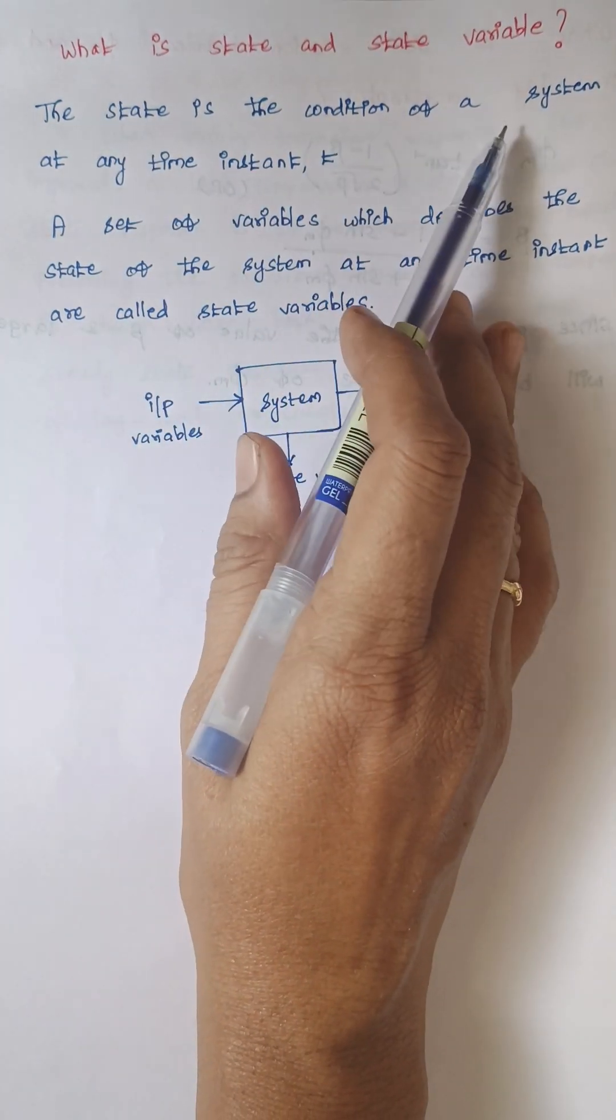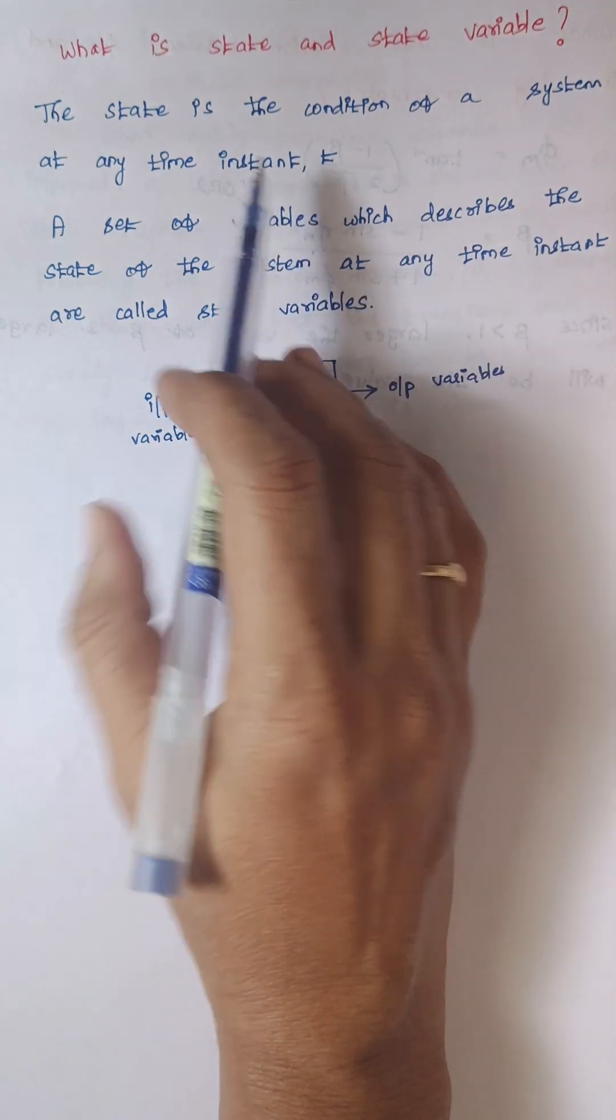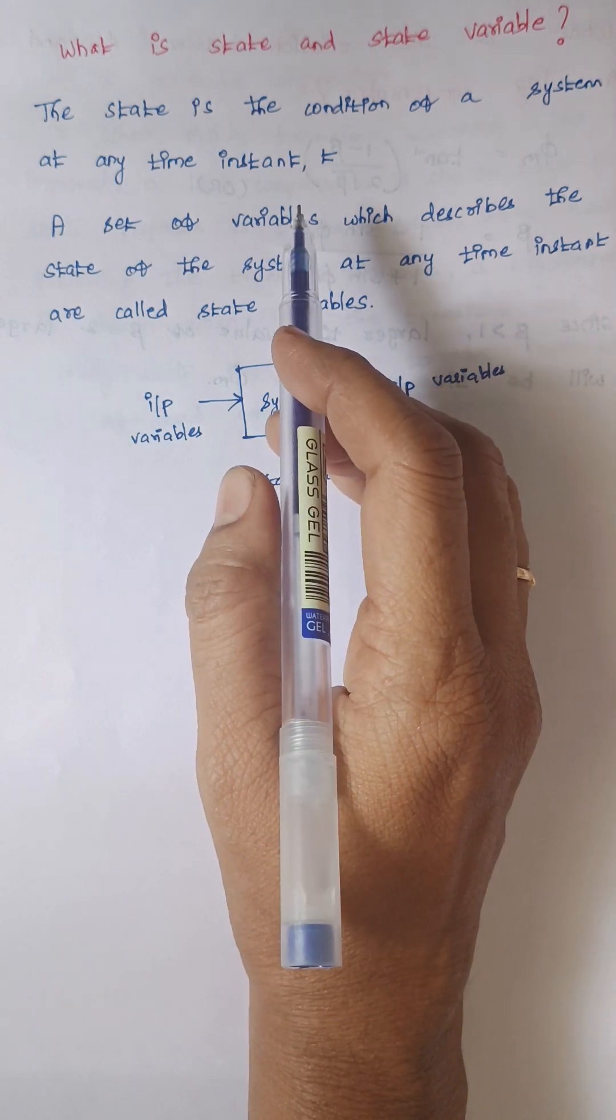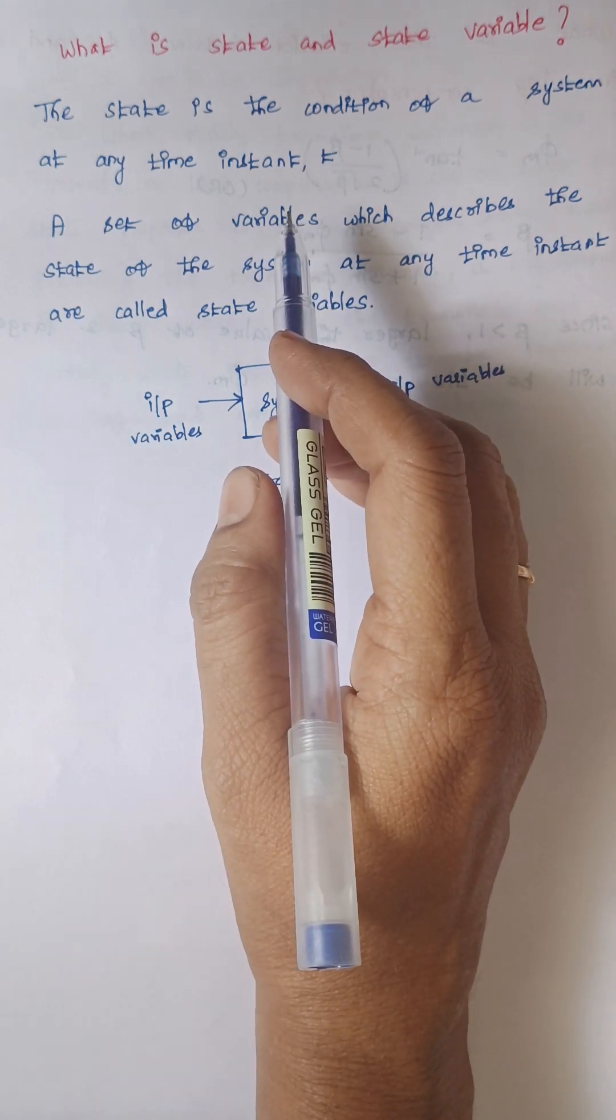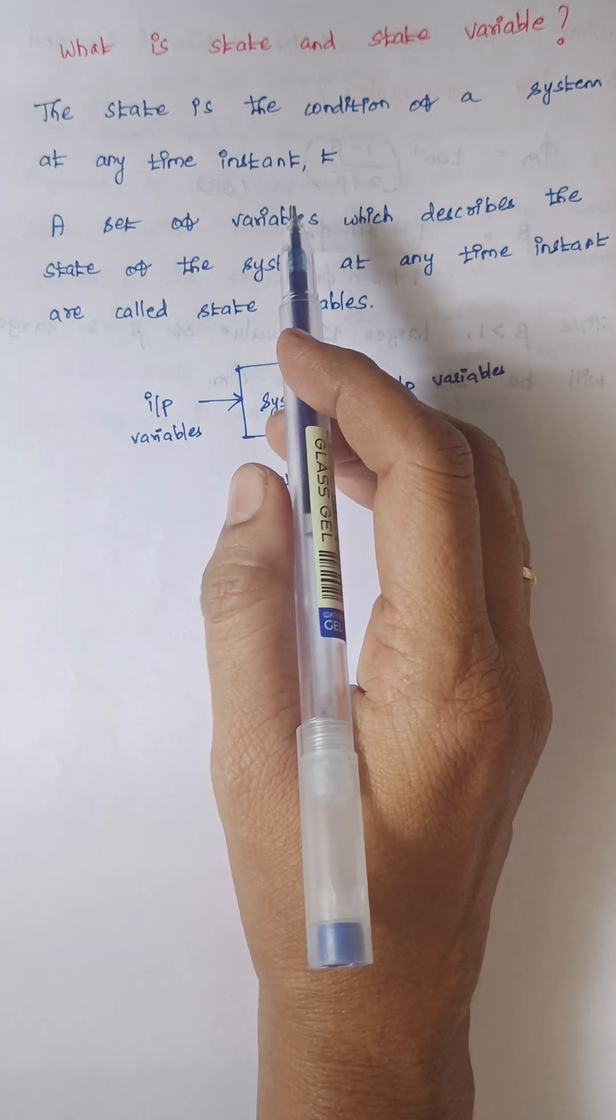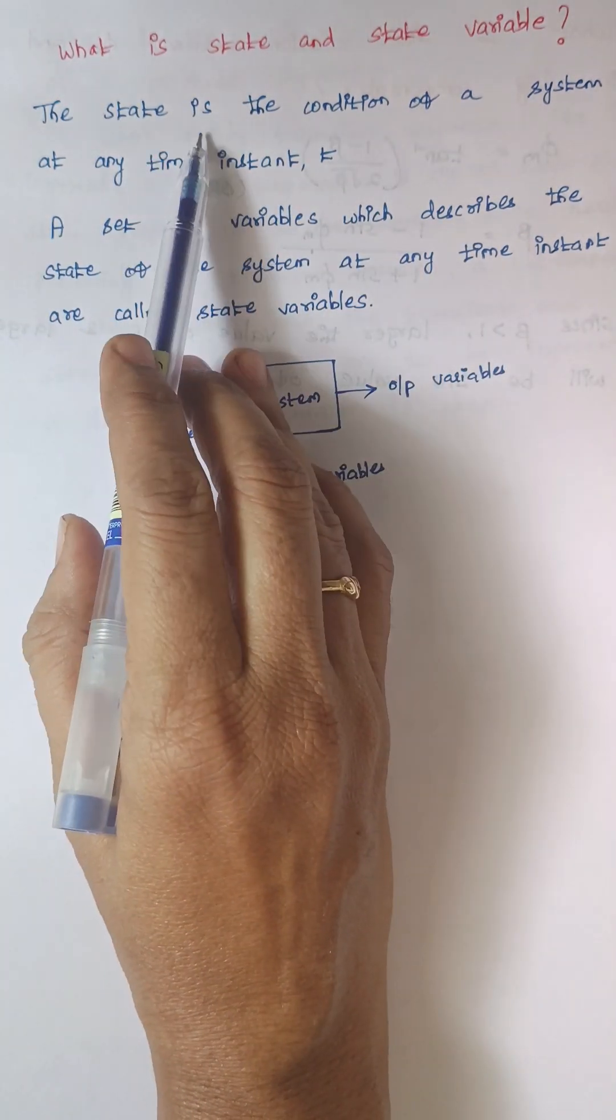The state is the condition of a system at any time instant t. It depicts the condition, how a system is at time t=0, or t=5 seconds, or t=2 minutes. The condition of a system is known as state.